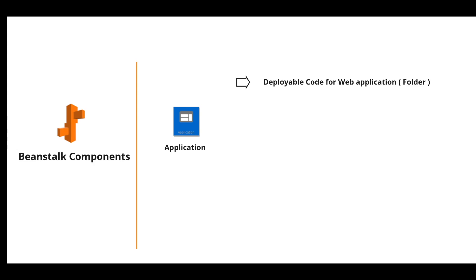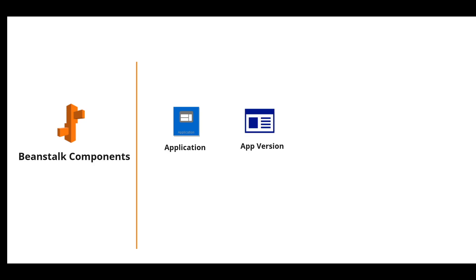Now let's talk about the Beanstalk components. The first one is Application. An application has all deployable code including the environments, versions, and environment configurations. When we want to deploy an application, generally we create a folder and place all the supported application components in it — so an application in Beanstalk can be thought of as a folder.